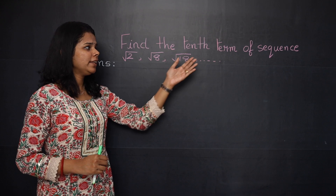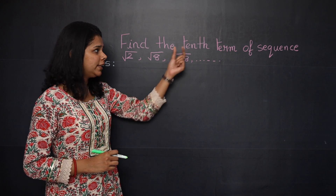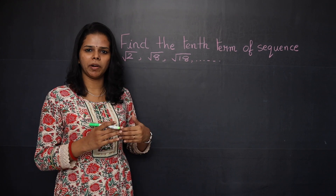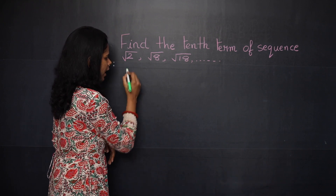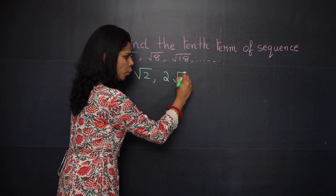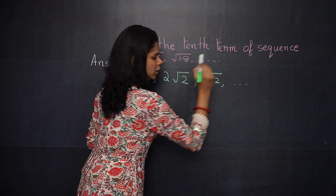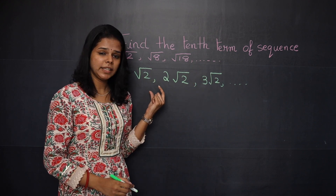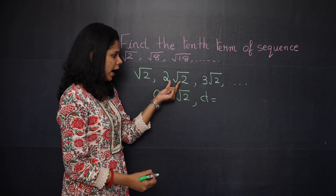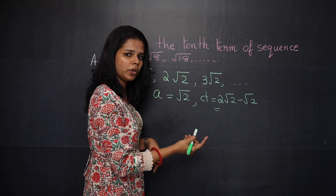Let's move on to the next question: Find the 10th term of the sequence √2, √8, √18, etc. You need to find a₁₀. The numbers are inside roots, so we will simplify for easier calculations. √2 stays as √2; √8 can be written as 2√2; √18 can be written as 3√2, and so on. So the first term a = √2, and the common difference d = 2√2 − √2 = √2.